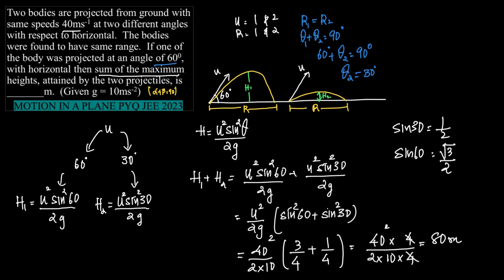So the correct option here is the sum attained, sum of height is 80 meters. Could we do it in any other way? Could we make the calculation work more simple?